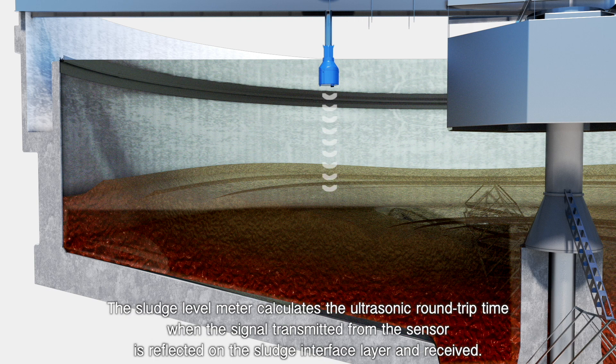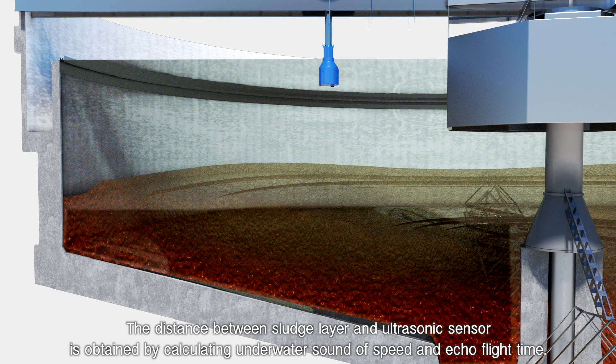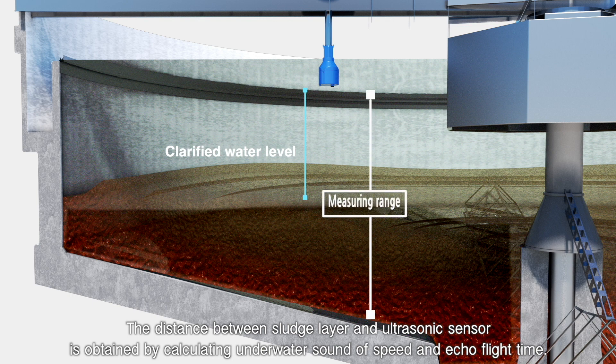The sludge level meter calculates the ultrasonic round-trip time when the signal transmitted from the sensor is reflected on the sludge interface layer and received. The distance between sludge layer and ultrasonic sensor is obtained by calculating underwater sound of speed and echo flight time.